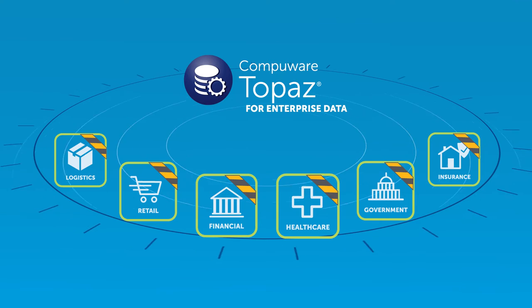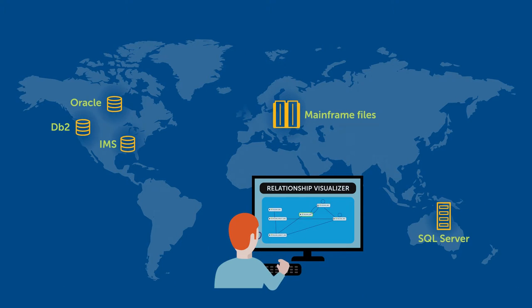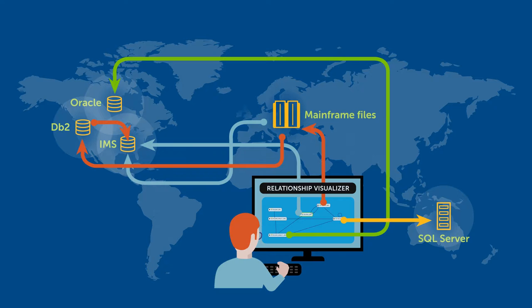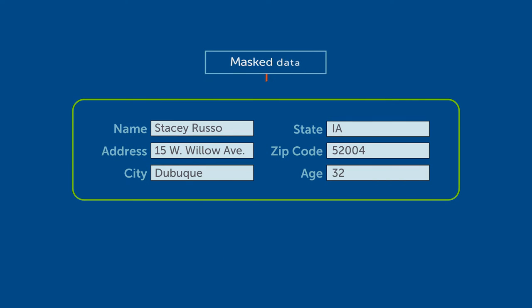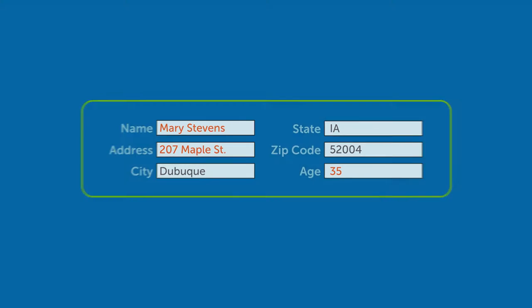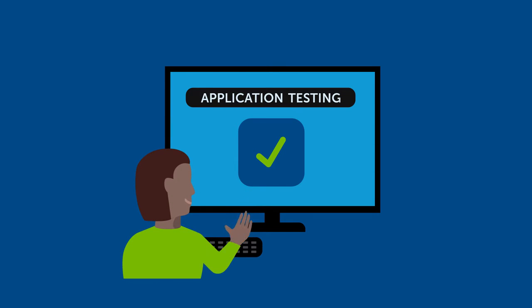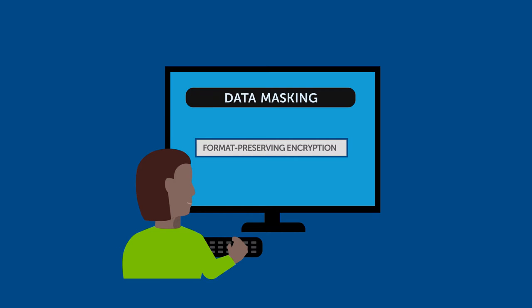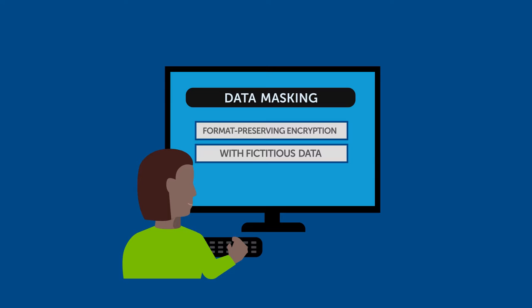CompuWare's Topaz for Enterprise Data includes data privacy capabilities for masking sensitive information in your test data. Topaz for Enterprise Data shows how test data flows to complex applications, databases, and platforms beyond the one being tested, and it masks all personally identifiable information while maintaining contextual information and data relationships, so testing produces accurate test results.